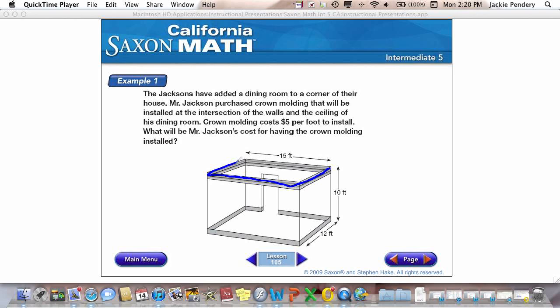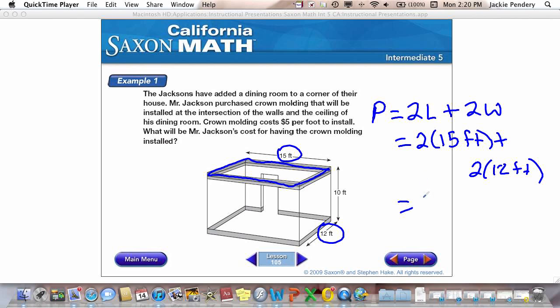This is where my crown molding goes, so I need to find the area around. So to use my formula, I have perimeter equals two times the length plus two times the width. So if my length equals 15 feet, that would be two times 15 feet plus two times my width, which is down here, which is 12 feet. So two times 15 equals 30 plus two times 12 equals 24. And so my perimeter equals 54 feet.